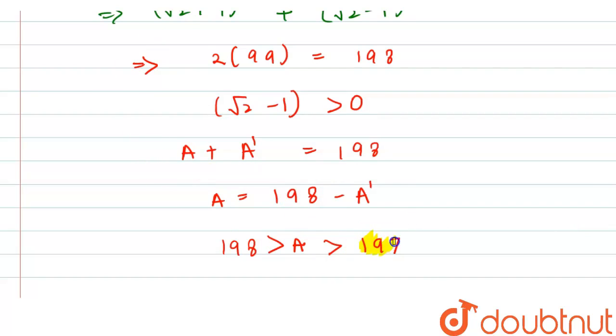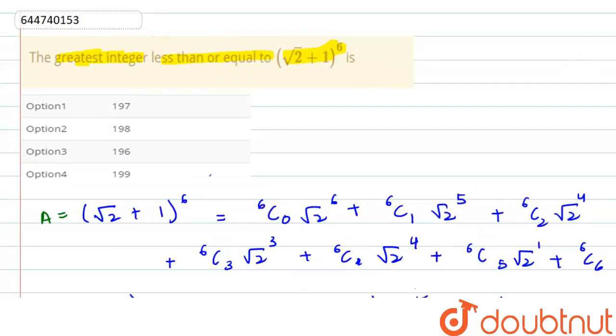Our answer to this question is 197, which is less than a. So our correct option is option 1, that is 197.